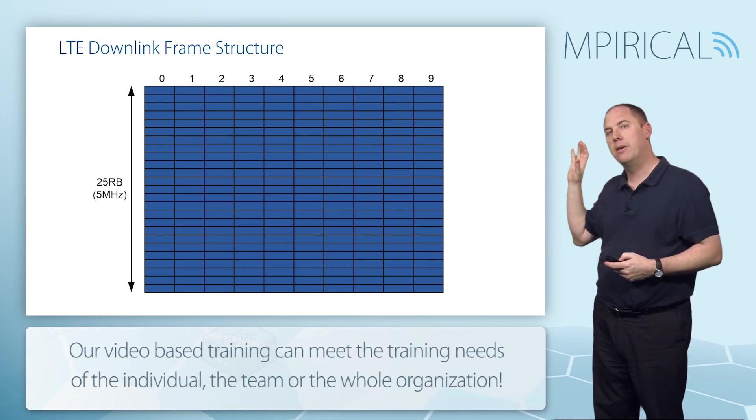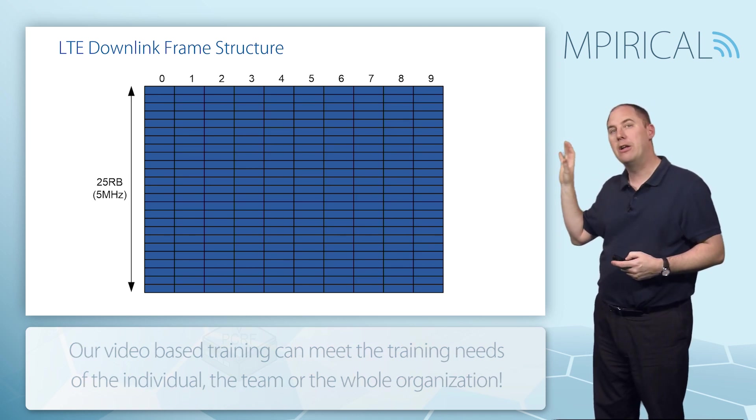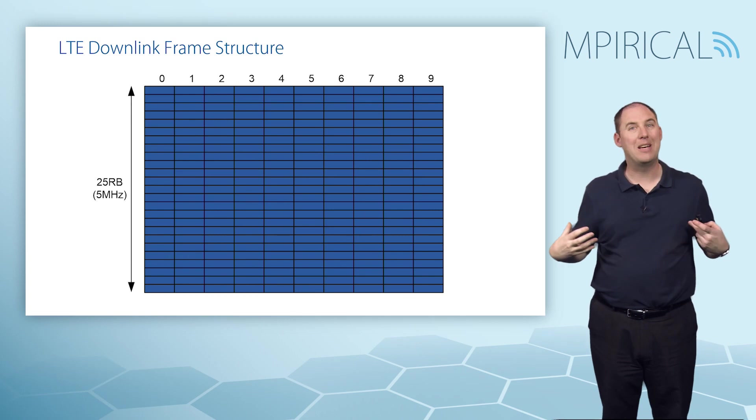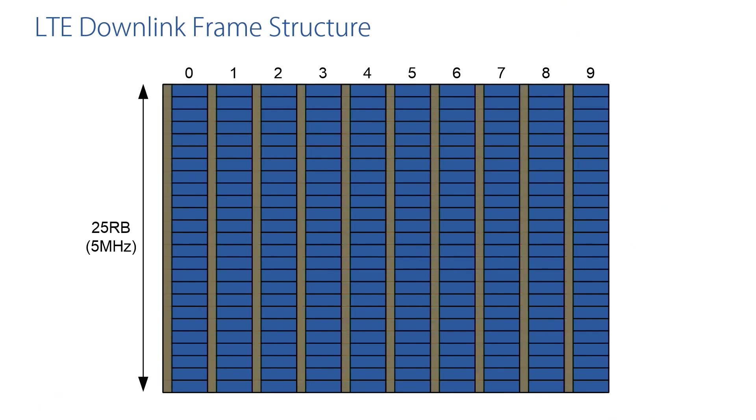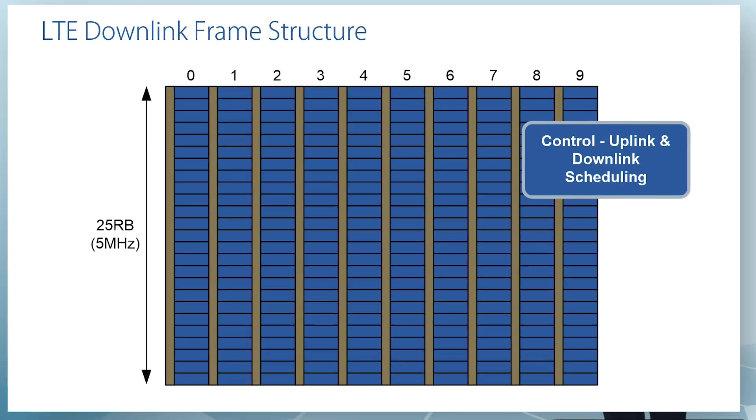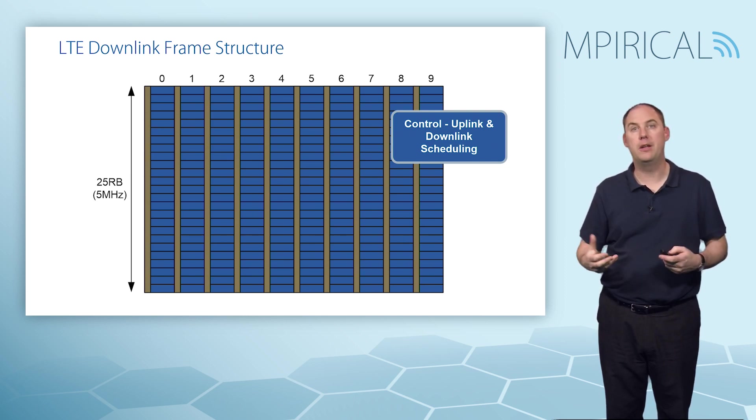The downlink frame structure in the uplink and downlink looks the same. What happens then is we allocate the channels to the downlink or the channels to the uplink. If you look at the downlink frame, you'll find these strips of control information. This control information is scheduling information for the downlink channels as well as uplink scheduling, scheduling uplink users effectively.